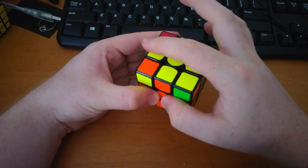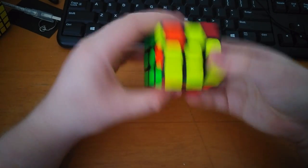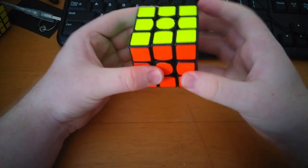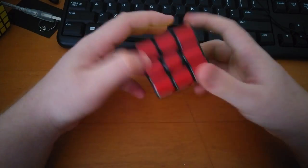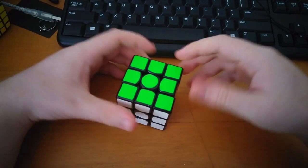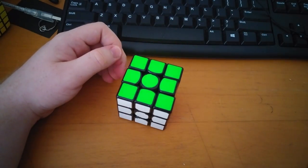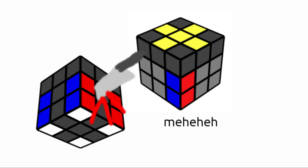Then you use one algorithm to solve the rest of the cube in one step. Because all the edges are already oriented, this cuts the number of cases that need to be learned down to just an eighth of full last layer. As a result, many cubers started working on learning it, thinking it would be the CFOP killer.